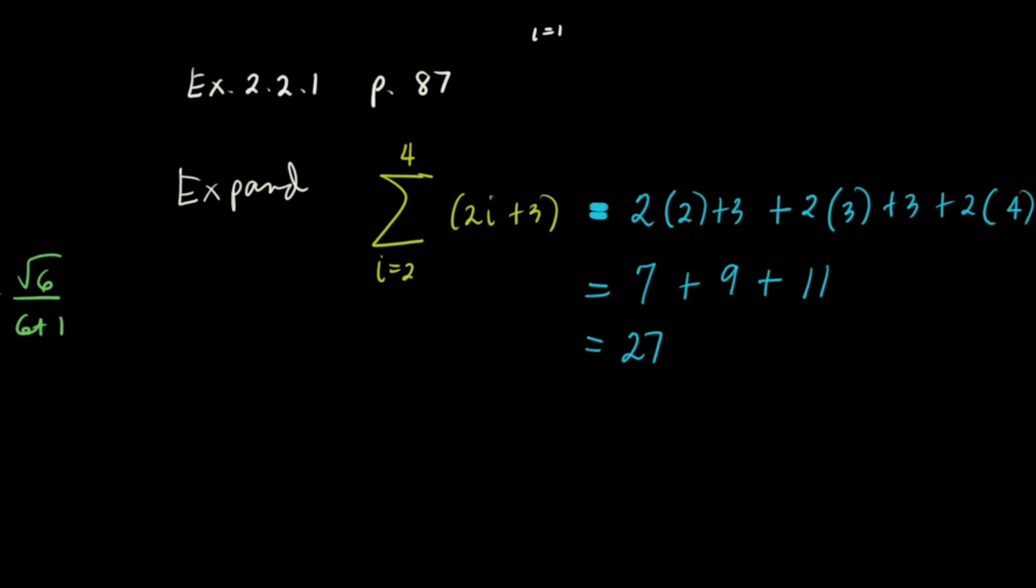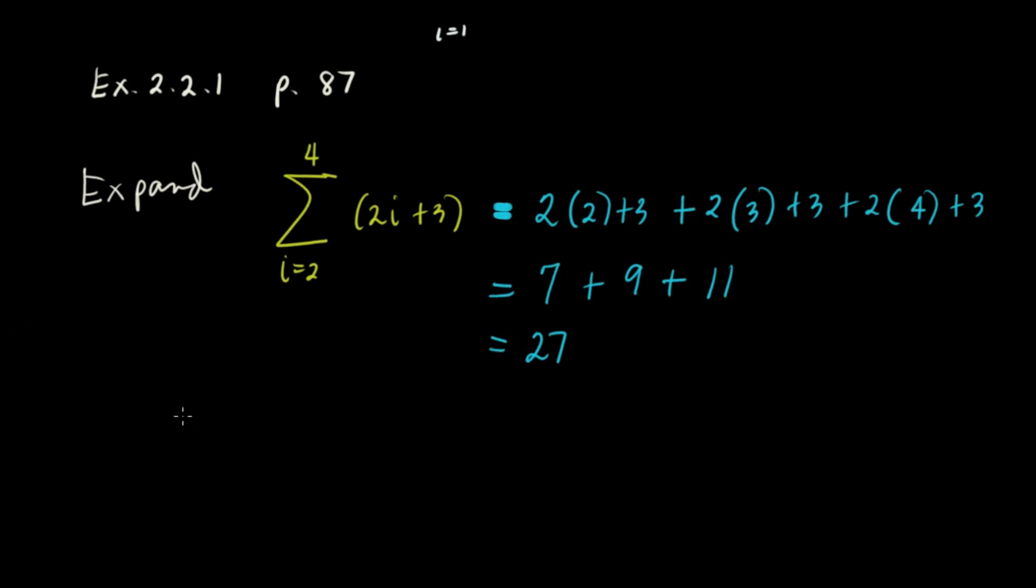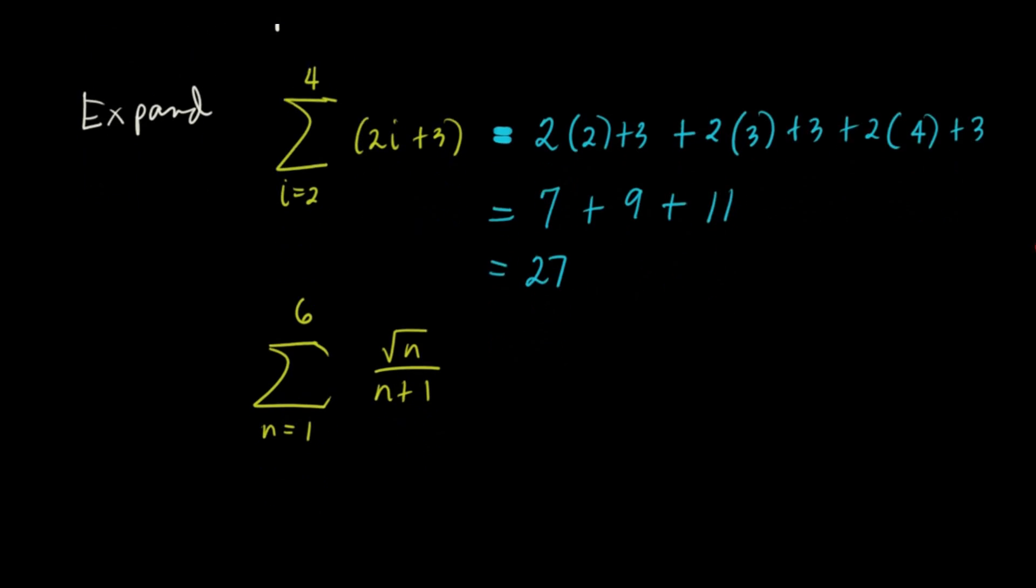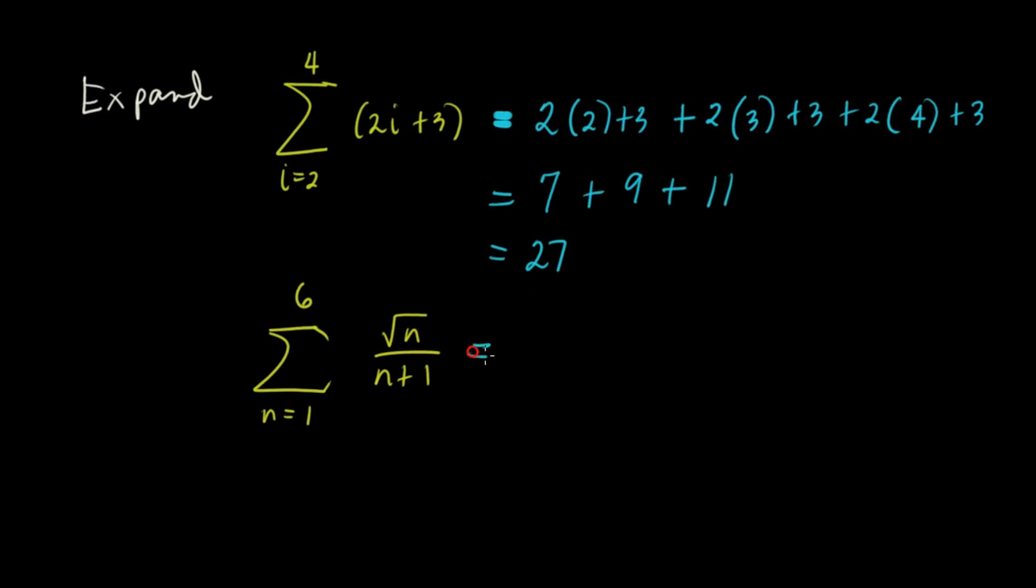Okay, let's have another example. We're going to expand summation of square root of n over n plus 1 as n runs from 1 to 6. And this is our rule: square root of n over n plus 1. So we're going to start with 1.